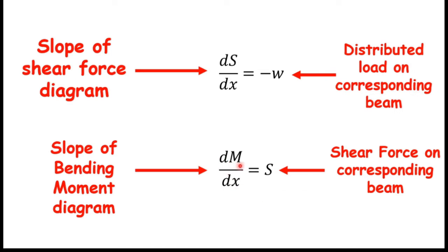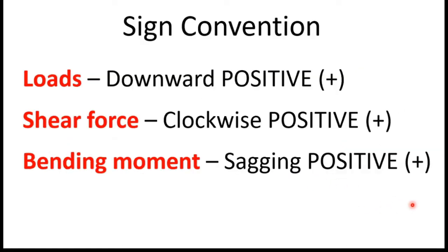Next, dM over dx equals capital S. dM over dx means slope of the bending moment diagram, and capital S means shear force on the corresponding beam. This is the sign convention I am going to use in this calculation: loads downward positive, shear forces clockwise positive, bending moment sagging positive.